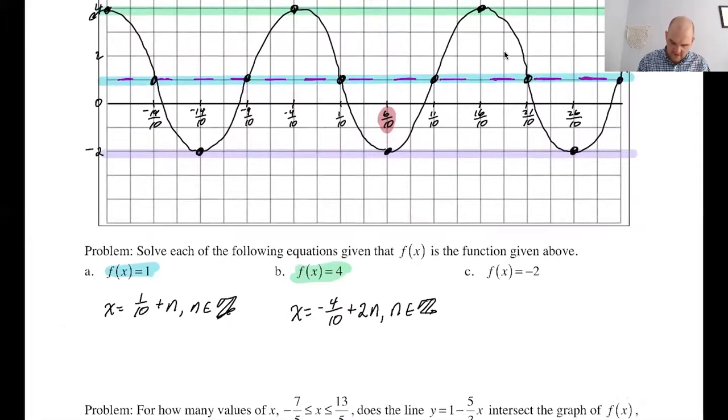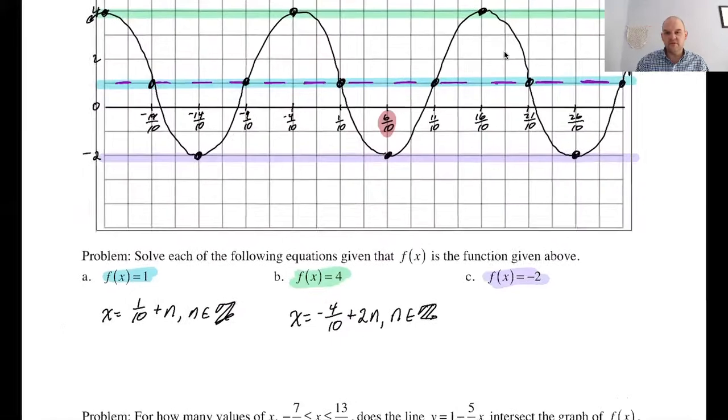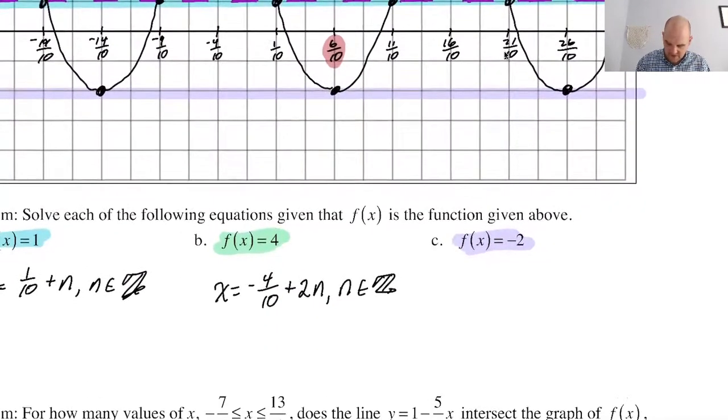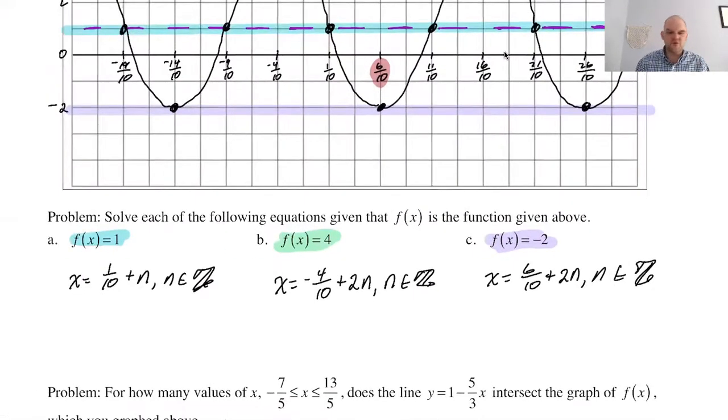Equals four. So equals four is the top, the maximum. So I just need one of them. So I'm going to go with negative four 10ths because it happens there. So X equals negative four 10ths plus the actual period because you get one per period. So two N, N is an element of the integers. And then this last one is the minimum. So I need one of them. So the starting point is actually a minimum. So I'm going to use that X equals six 10ths or three fifths and then plus the period. So two times N, N is an element of the integers.